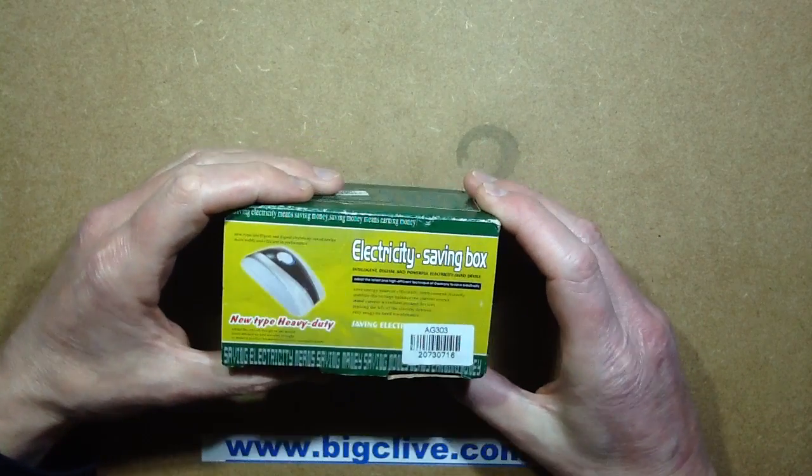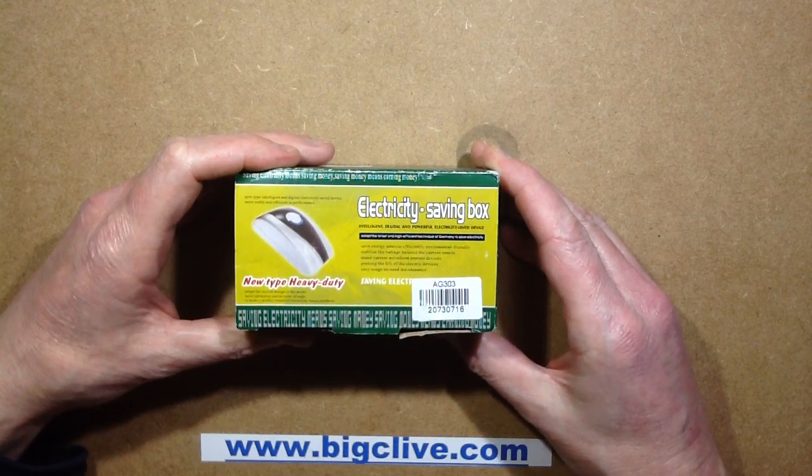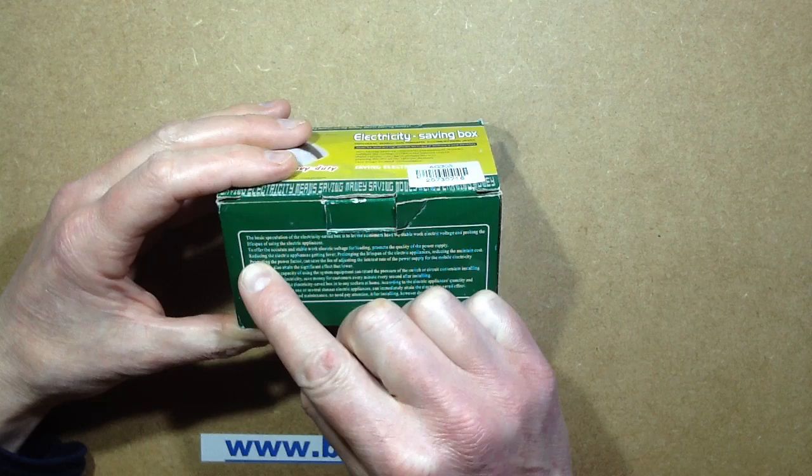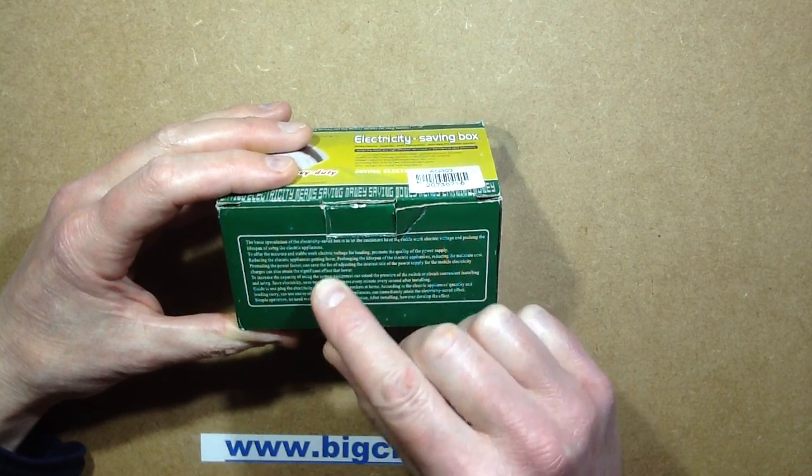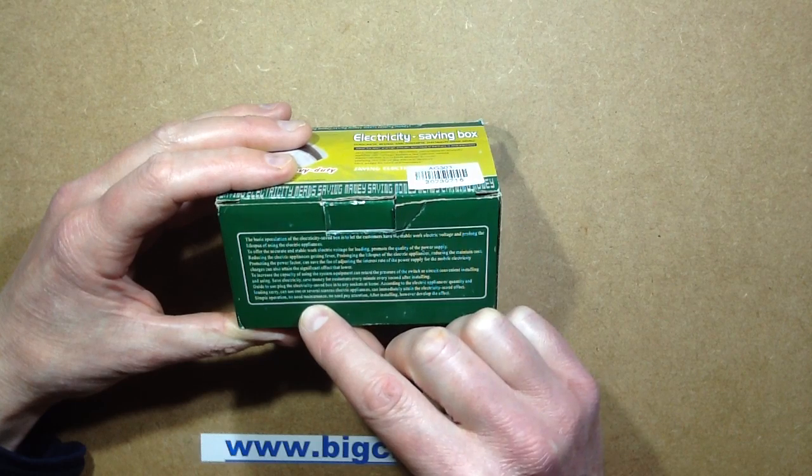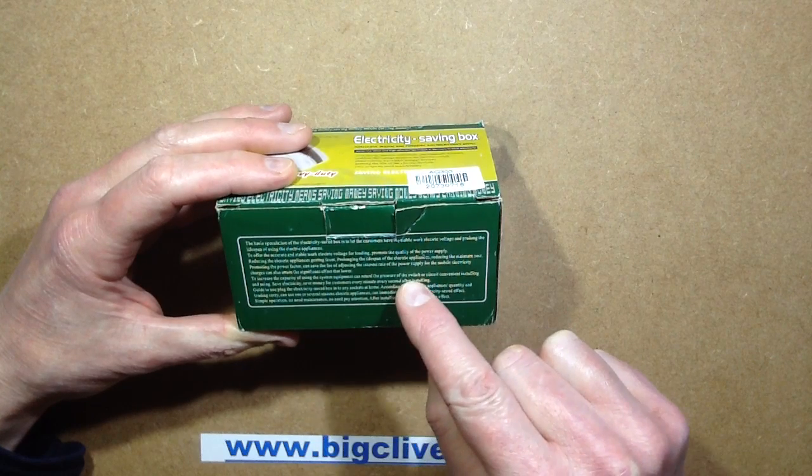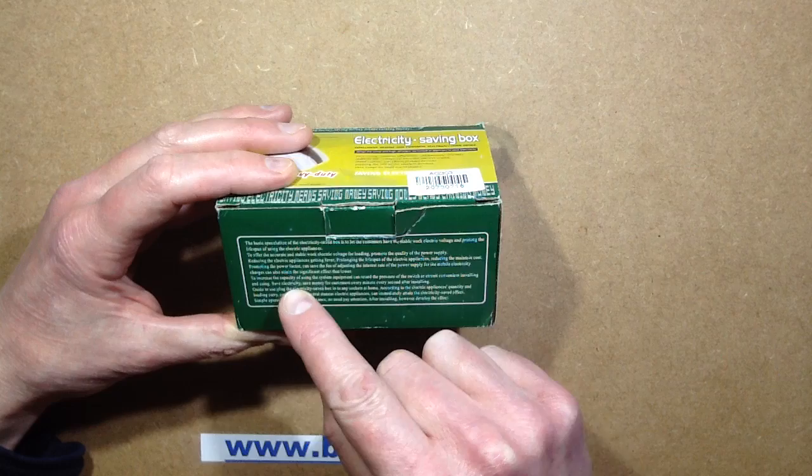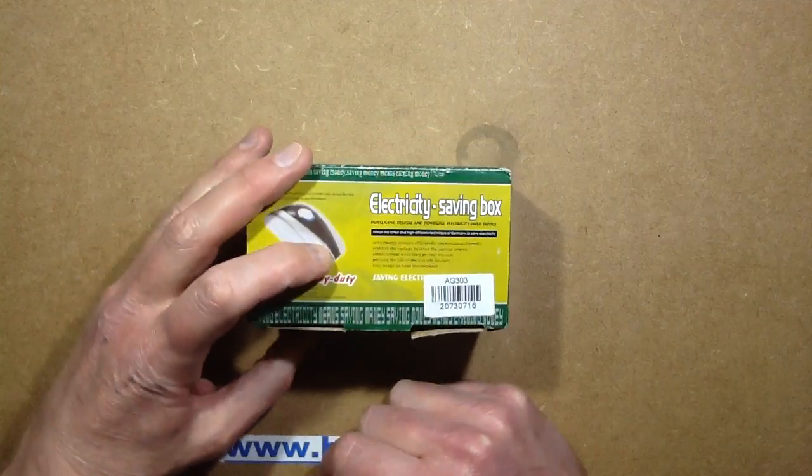Another gadget has arrived from China just in time for the weekend, and it's an electricity saving box. Apparently this device is reducing the electric appliances getting fever and other useful things. It can increase the capacity of using the system, save electricity, and save money for customers every minute after installing. That's helpful.